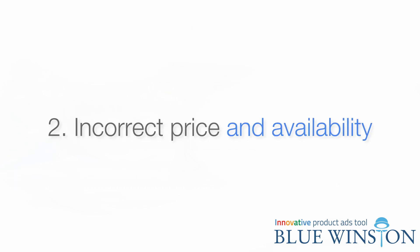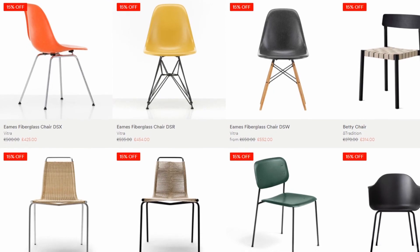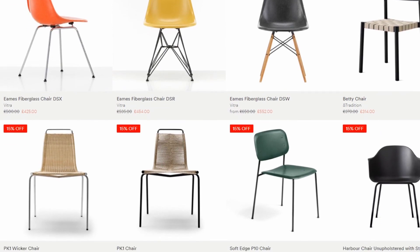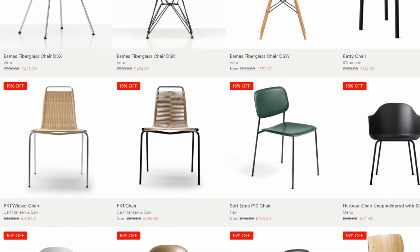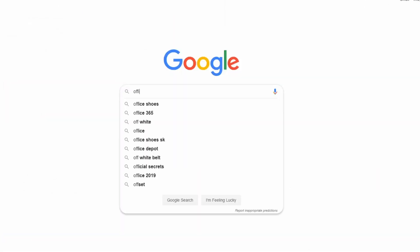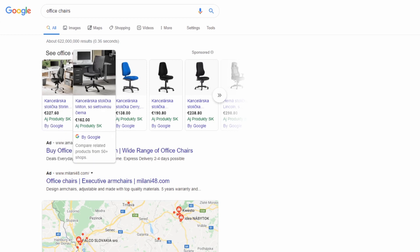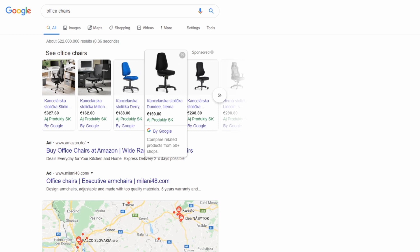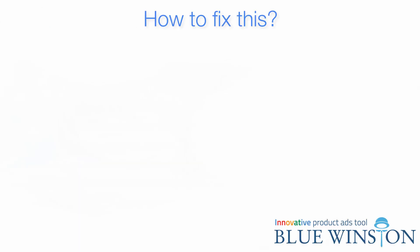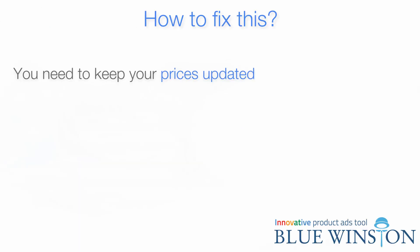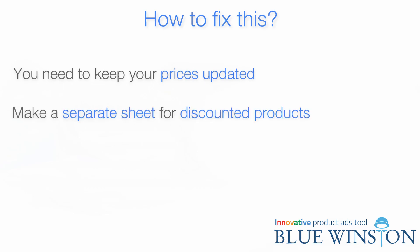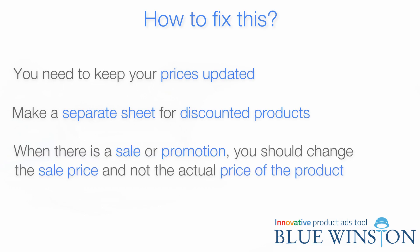Incorrect price and availability is a common mistake. The prices you submit to your feed must match the same price on your website or landing page. Google searches everywhere to make sure it matches, and if any variance is found, these products will not be approved. This error can occur when your feed is not fresh or well updated. To fix this, keep your prices updated. You can make a separate sheet for discounted products and fetch from the original Google Sheet. When there is a sale or promotion, change the sale price and not the actual price of the product.